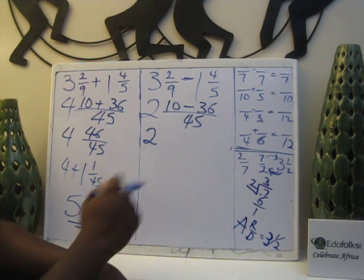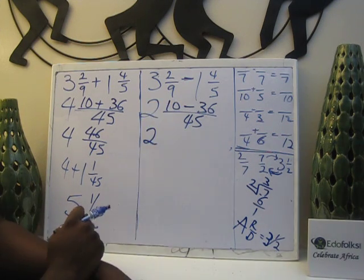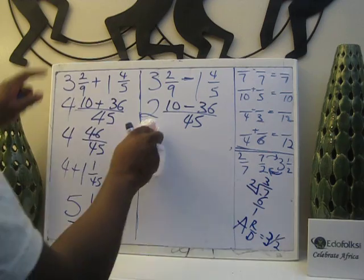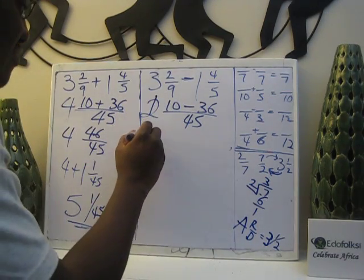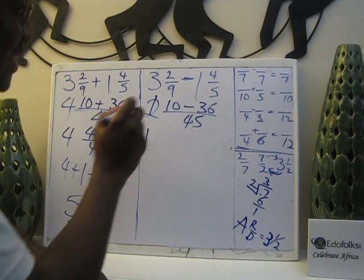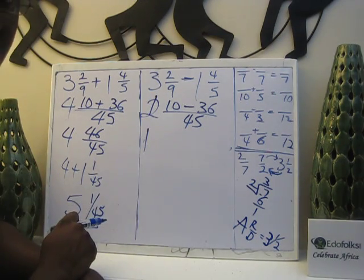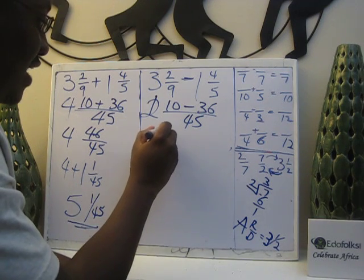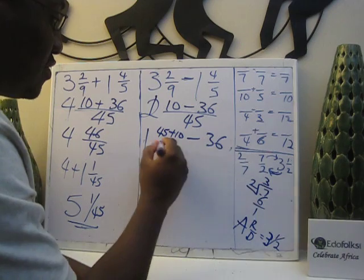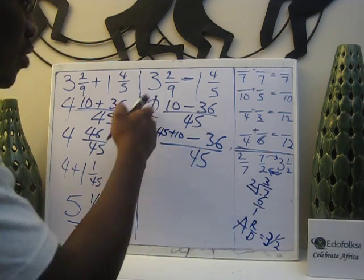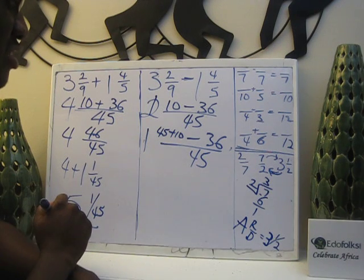We have a problem here. Ten is too small to be subtracted from thirty-six. So I have to borrow from two. And when I borrow from two, I have one left. That one I add here is always the value of the denominator. So I now have forty-five plus ten minus thirty-six over forty-five. Whenever you borrow from the whole number and add to a smaller number to subtract, it's the value of the denominator.